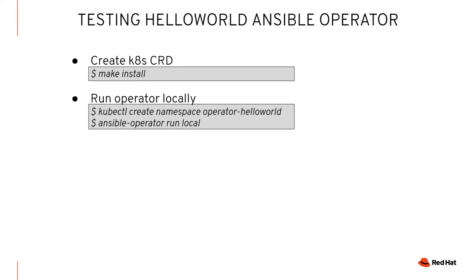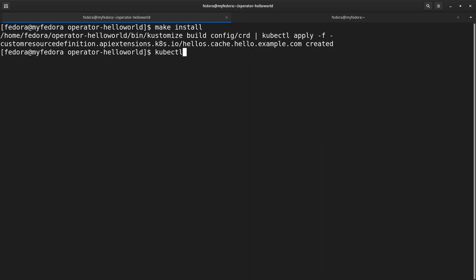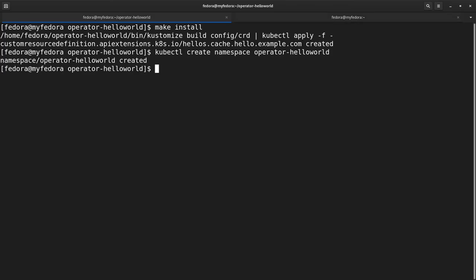Now we can actually test our operator. We're going to use make and do make install, which deploys our CRD — our API endpoint for the operator. Then we're going to create a namespace and run the operator in local mode. Running in local mode basically runs it in the terminal so we see everything in standard out, allowing us to quickly test without going through a full deployment, creating a Docker image, pushing it to registries.